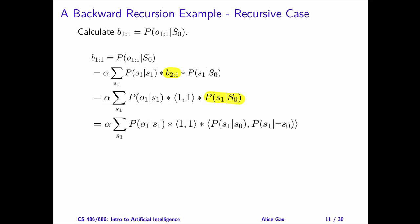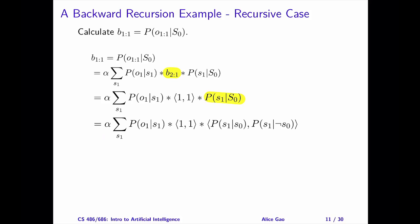Finally, let's write the sum over S1 explicitly into two terms, one for S1 equals true and one for S1 equals false. At this point, the formula contains all small letters. We're ready to plug in the numbers.